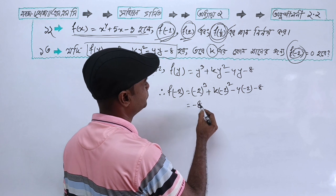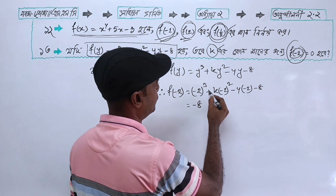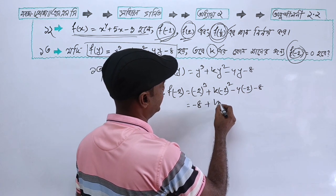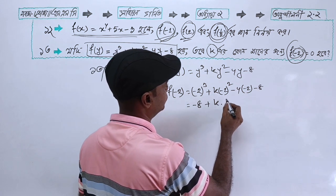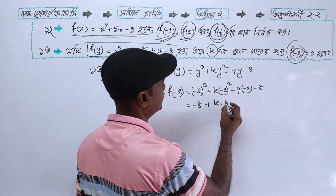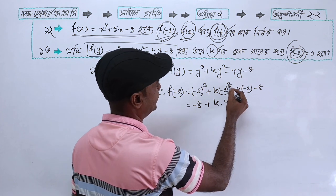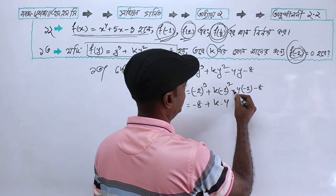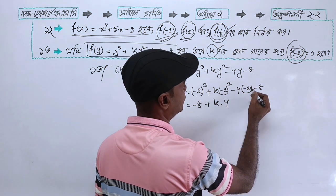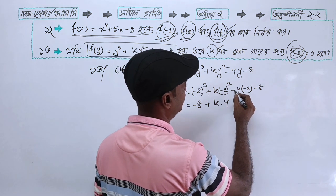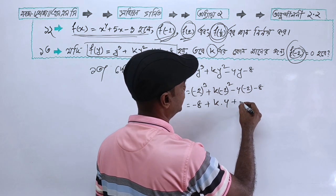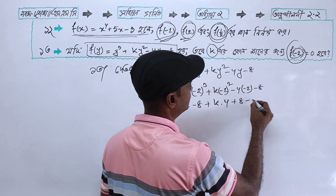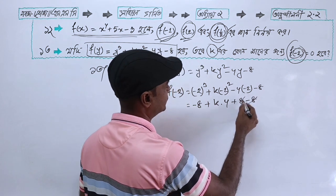Then minus 2, plus k into 2, giving us 4, then minus 2, minus 4, minus 4, minus 2, minus 2, minus 8, plus 4, minus 8, plus 8, minus 8. So we simplify step by step.